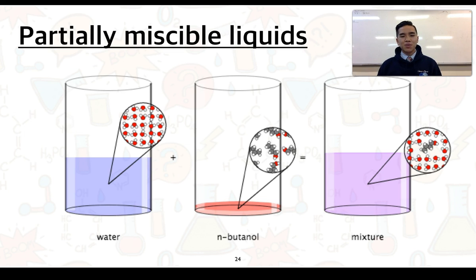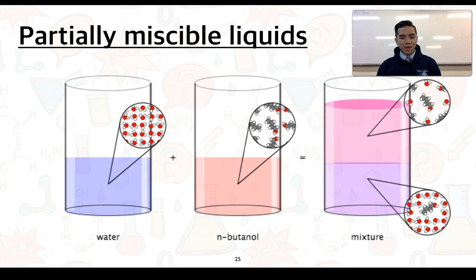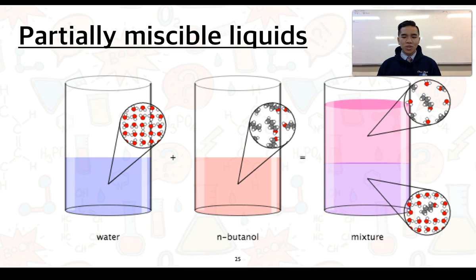N-butanol, which is the same as butan-1-ol, is a partially miscible liquid. If we have 100 mL of water, only about 9 mL of butan-1-ol can mix with water to form a single layer. If we add more, it starts to form two immiscible layers. In one layer there's about a 50-50 ratio of water to butan-1-ol, while the bottom layer is about 98% water and 2% alcohol. These layers have distinct chemical compositions.